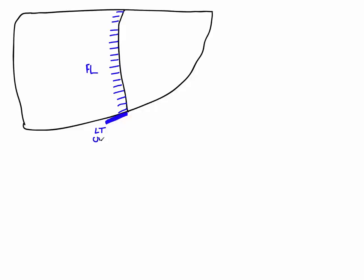The ligamentum teres is a remnant of the umbilical vein. The falciform ligament separates the liver into two anatomical lobes: here we have the right lobe and here we have the left lobe. We can also see just creeping out underneath the inferior surface of the liver part of the gallbladder, which we'll see in more detail when we look at the visceral posterior surface.